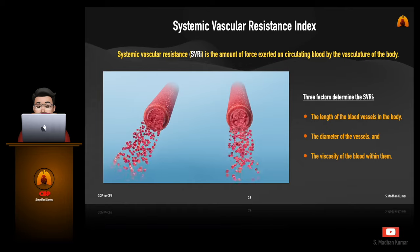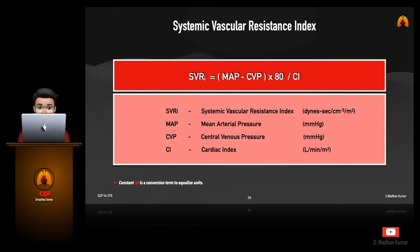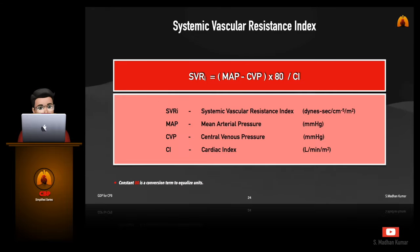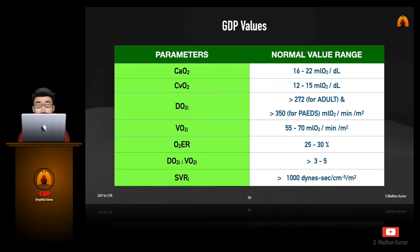Systemic vascular resistance is the amount of force exerted on circulating blood by the vasculature of the body. To calculate SVRI during bypass, we need an input of mean arterial blood pressure, central venous pressure, and the cardiac index maintained during bypass. We have seen how to calculate CaO2, CVO2, DO2I, VO2I, oxygen extraction ratio, DO2I to VO2I ratio, and SVRI. The normal value ranges are shown in this table for us to consider during cardiopulmonary bypass. It is a must for us to keep the levels in this range to attain a good goal-directed perfusion.